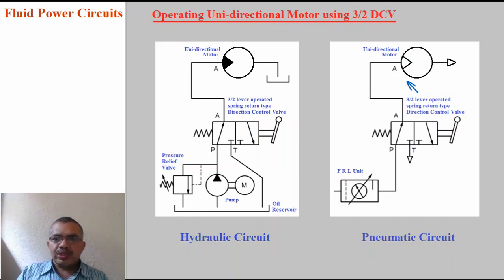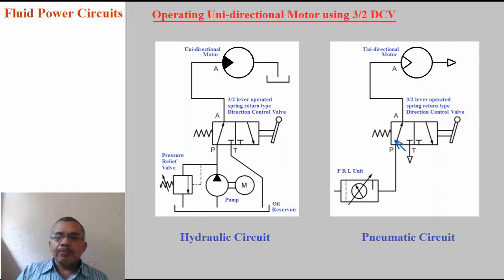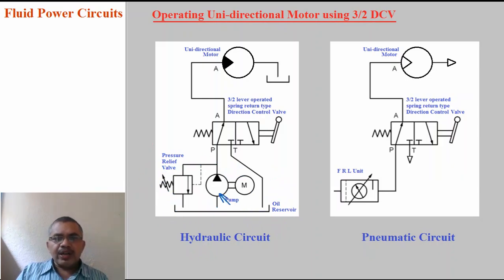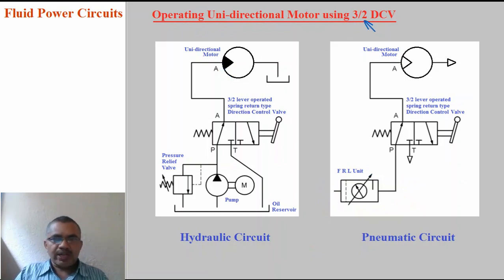In the pneumatic circuit, compressed air flows to the unidirectional motor in the first lever position and is exhausted to atmosphere from the motor outlet. When the lever is shifted, P closes and A to T connection is made — the unidirectional motor stops. Both hydraulic and pneumatic circuits are shown side by side so you can understand the difference. In the hydraulic circuit we use a hydraulic power pack: reservoir, pump, motor, and pressure relief valve. In the pneumatic circuit, we draw the FRL unit. That is the only difference.